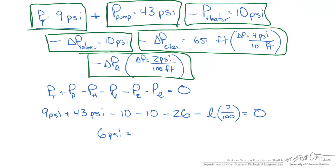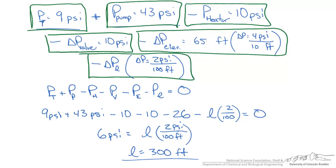We're left with 6 psi equals L times 2 over 100. This means our L is going to be 300 feet. So for this problem, our estimated maximum length of the pipe is 300 feet, given our pump capacity and the losses associated with the components in the system.